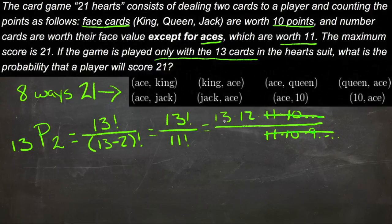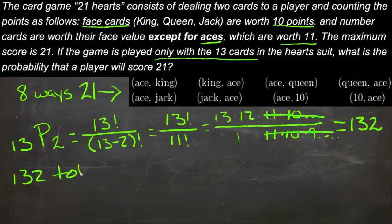So what we have left then on top is 13 times 12 over 1, so that doesn't matter on the bottom. So we'll get 13 times 12, which is 132. So we have 132 total permutations.